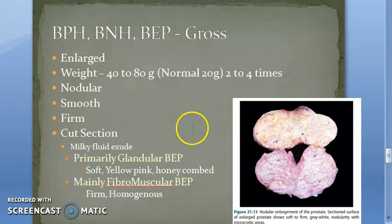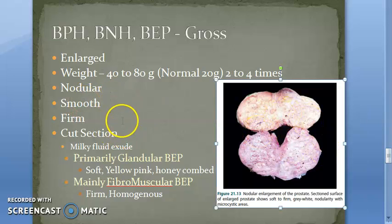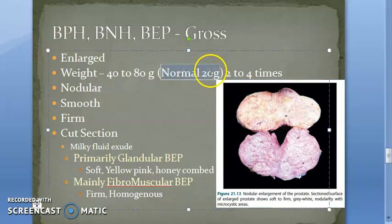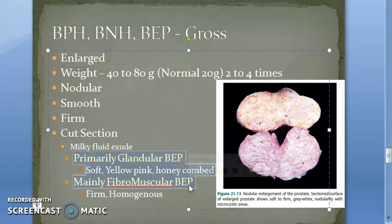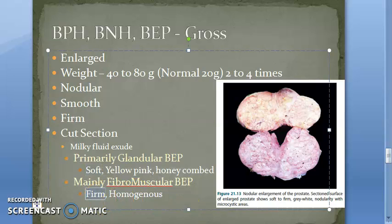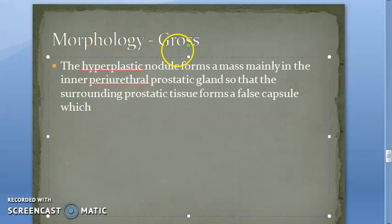Looking at the gross morphology: the prostate is enlarged, weighing 40 to 80 grams — two to four times the normal weight of 20 grams. It will be nodular, smooth, and firm. On cut section, a milky fluid exudate is seen. There are two types: primarily glandular hyperplasia, which gives a softer consistency, or primarily fibromuscular hyperplasia, which will be firmer.